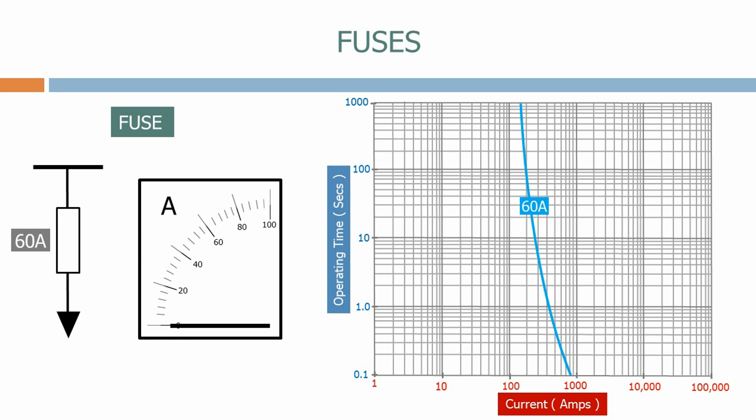Fuses come in various current ratings and each of these different fuse ratings has its own characteristic. As you would expect, as the current rating increases the characteristic pushes farther down the current axis.